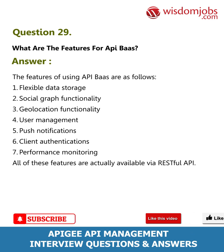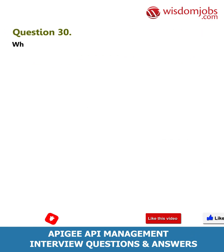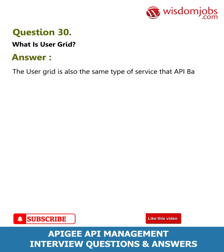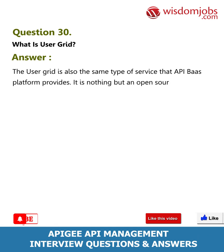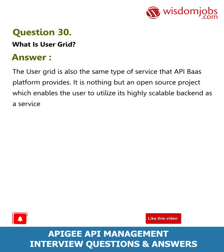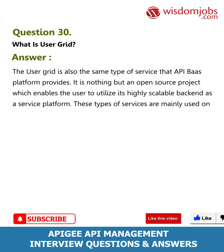Question 30: What is User Grid? Answer: User Grid is the same type of service that the API BaaS platform provides. It is an open-source project which enables the user to utilize a highly scalable Backend as a Service platform. These types of services are mainly used on mobile platforms.